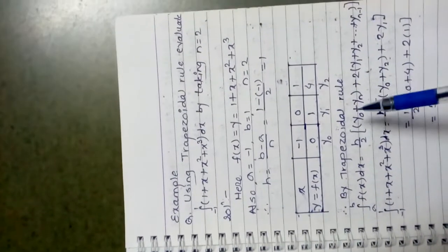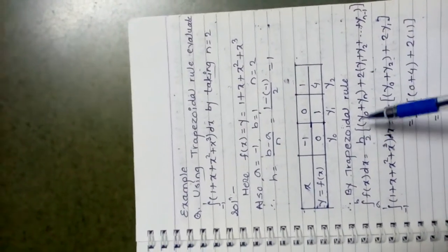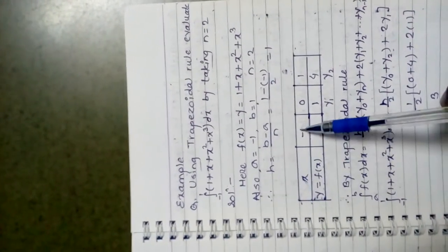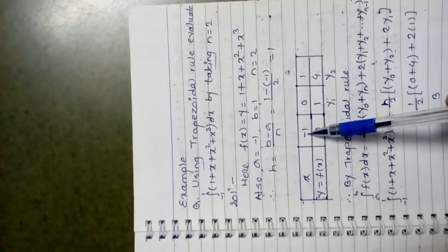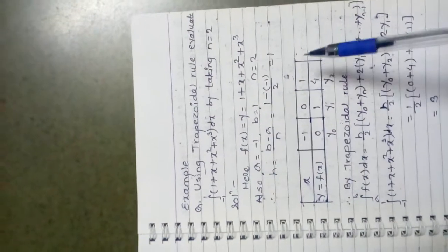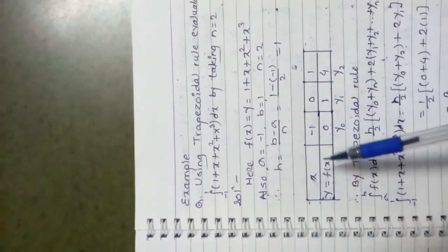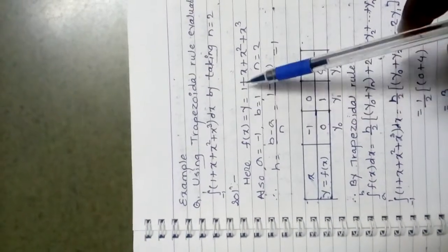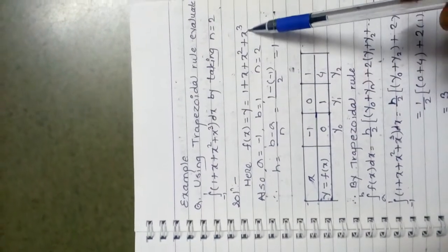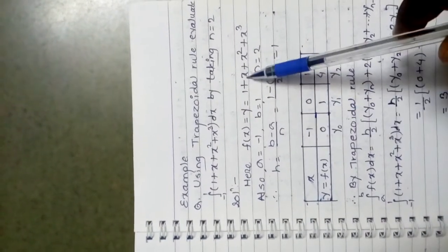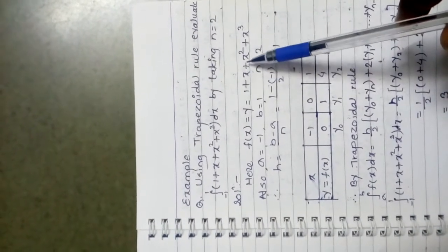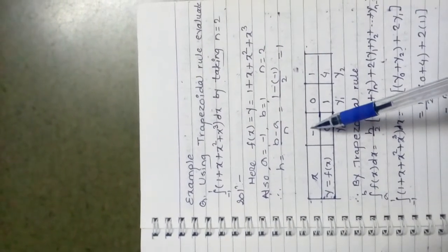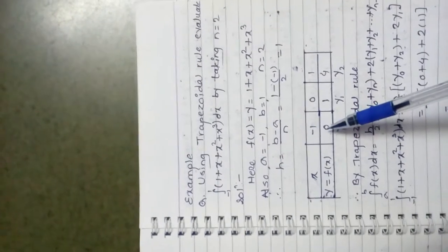Now we have to find all the values of y. The values of x range from -1 to 1, which are the lower and upper limits. We evaluate y = f(x) = 1 + x + x² + x³. First, putting x = -1: 1 + (-1) + (-1)² + (-1)³ = 1 - 1 + 1 - 1 = 0. So at x = -1, y = 0.